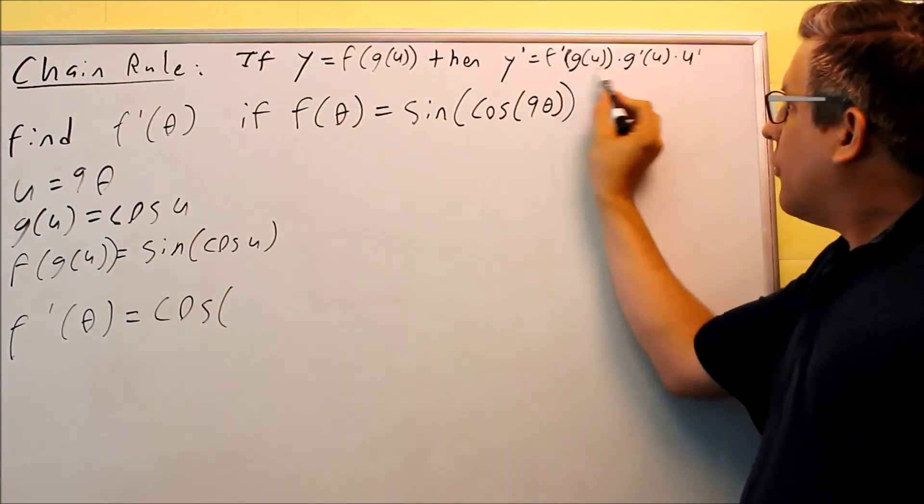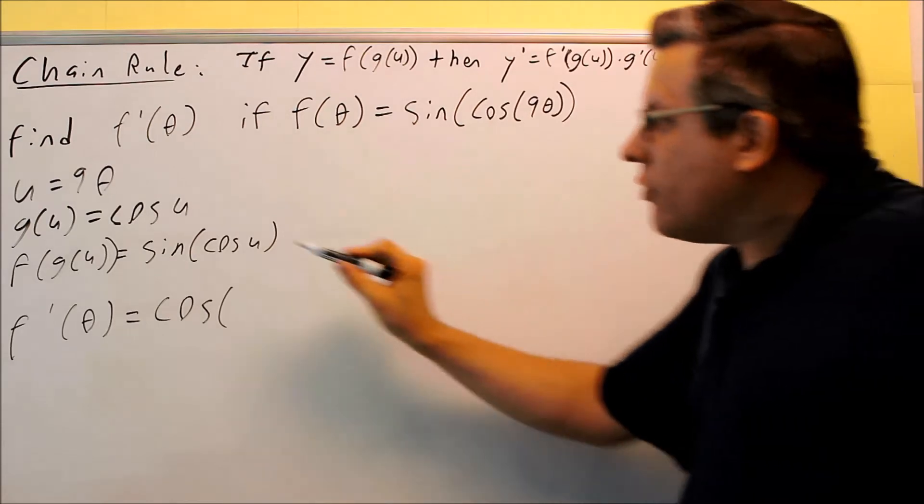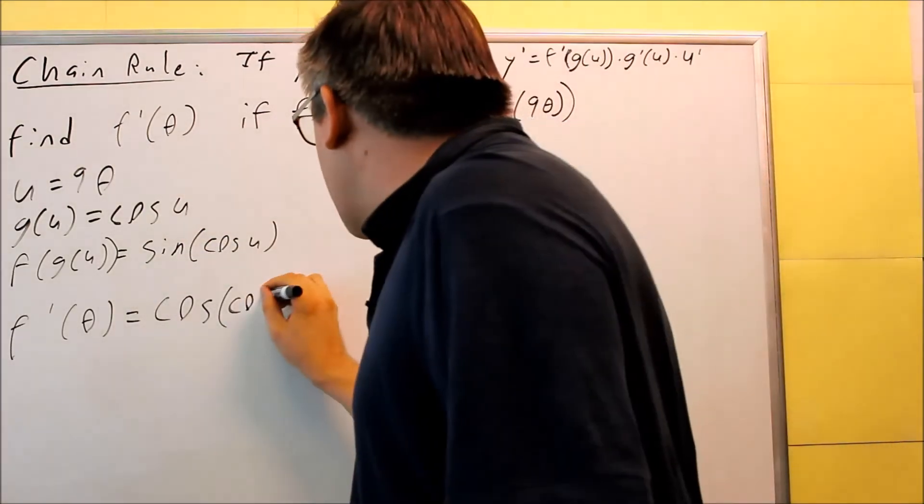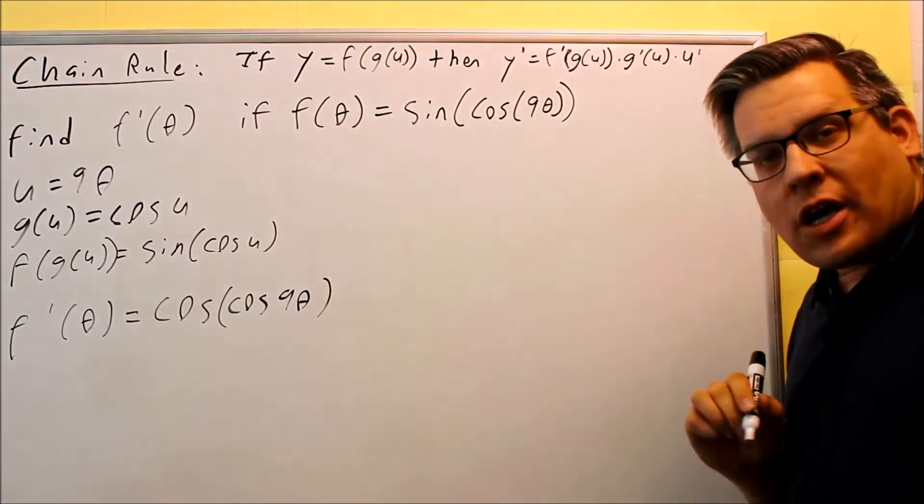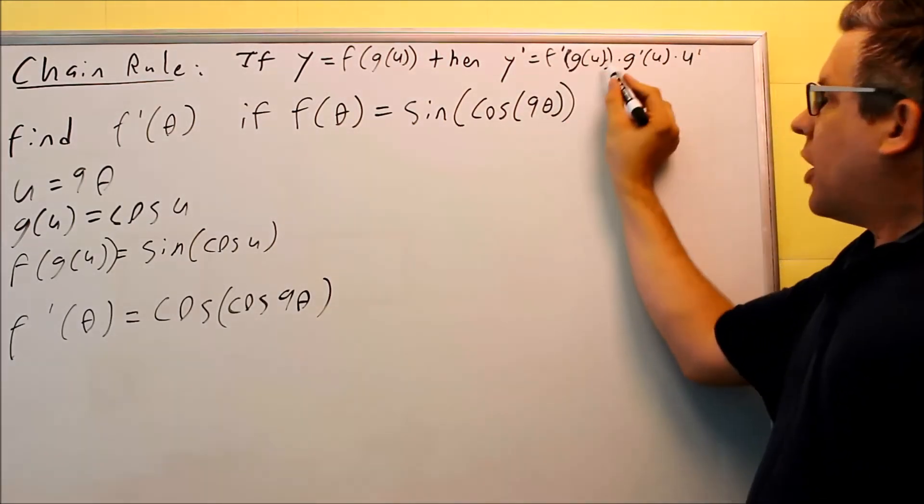So what do I write on the inside? Well, it's f primed of g of u. g of u we said was cosine of u, or we'll put cosine 9θ. In this case, we'll put the 9θ back in for u. That takes care of the first part.